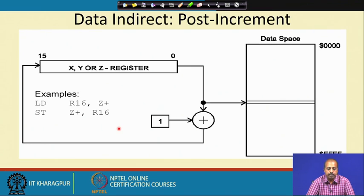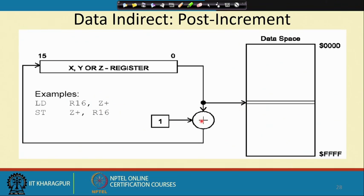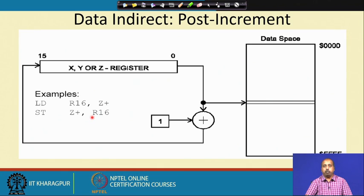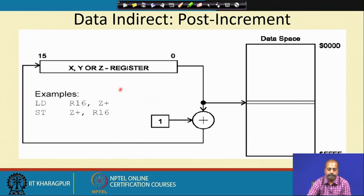We can also have post-increment — Z+. The Z register value will be incremented, but the previous value of Z will be used to access the memory. After that, the Z register content will be incremented by 1 — this is post-increment mode. Similarly for storing: ST Z+, R16. We have pre-decrement and post-increment; post-decrement and pre-increment modes are not available.